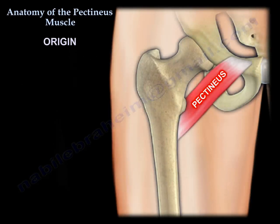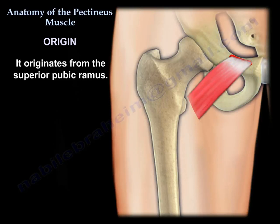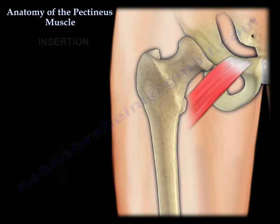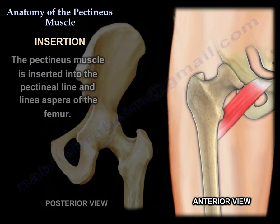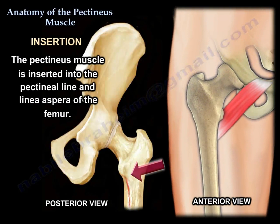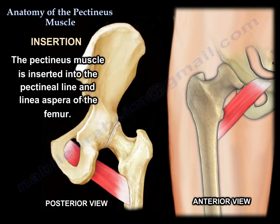Origin: it originates from the superior pubic ramus. Insertion: the pectineus muscle is inserted into the pectineal line and linea aspera of the femur.